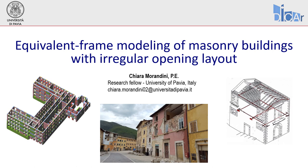Good afternoon and welcome back to this series of webinars. Today we are focusing on the use of the equivalent frame approach in the presence of an irregular opening distribution. We will see different sources of irregularity that may affect existing masonry buildings, which can consist of the presence of a window and a door, or can be the effect of renovation work. We will also discuss criteria that can be applied to achieve a reliable response even in the presence of an irregular opening layout.